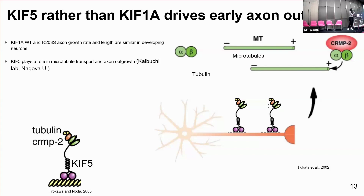So now we wanted to look at why we're not seeing gross morphological differences in our wild type and variant neurons. We think a reason for this is the contribution of other kinesins like KIF5, which is very important in early axon outgrowth and microtubule transport. Here is a diagram showing KIF1A carrying tubulin, which is an important cellular component in axon outgrowth. We're thinking that KIF1A becomes more important at a later stage of development than the one we're currently looking at.